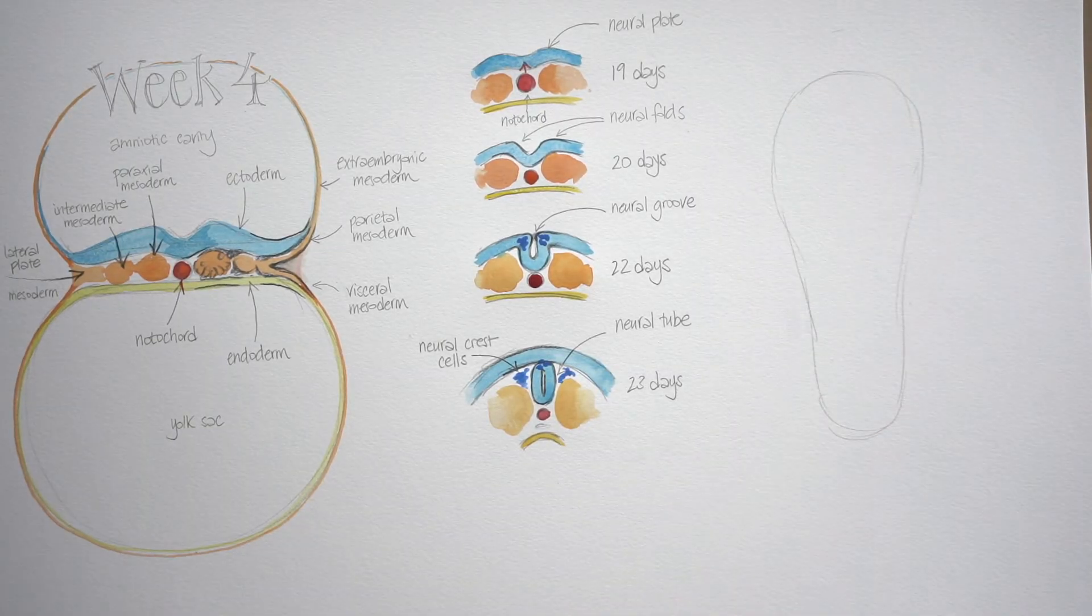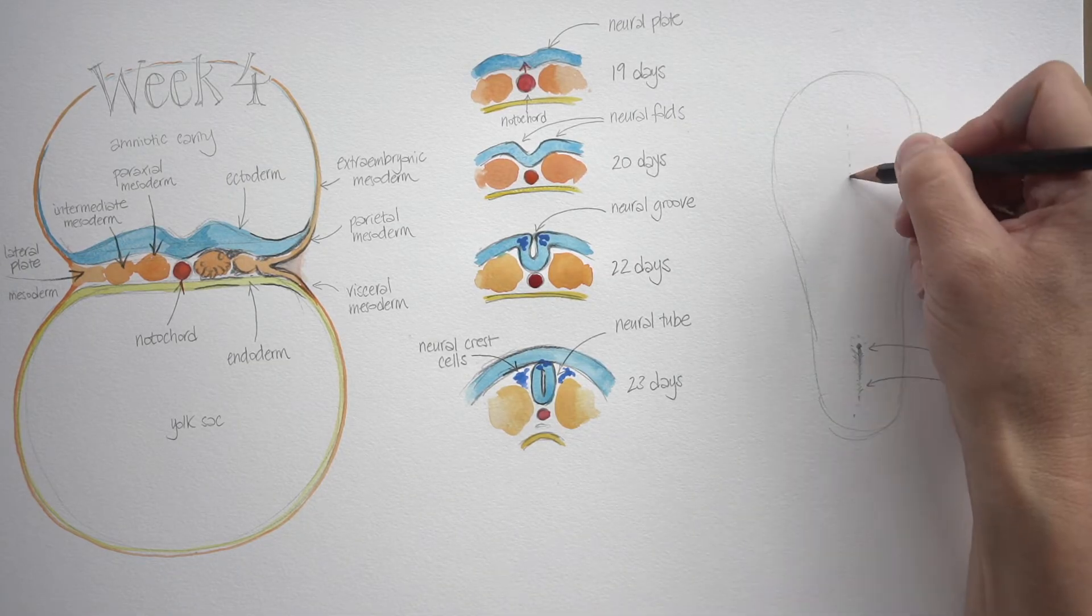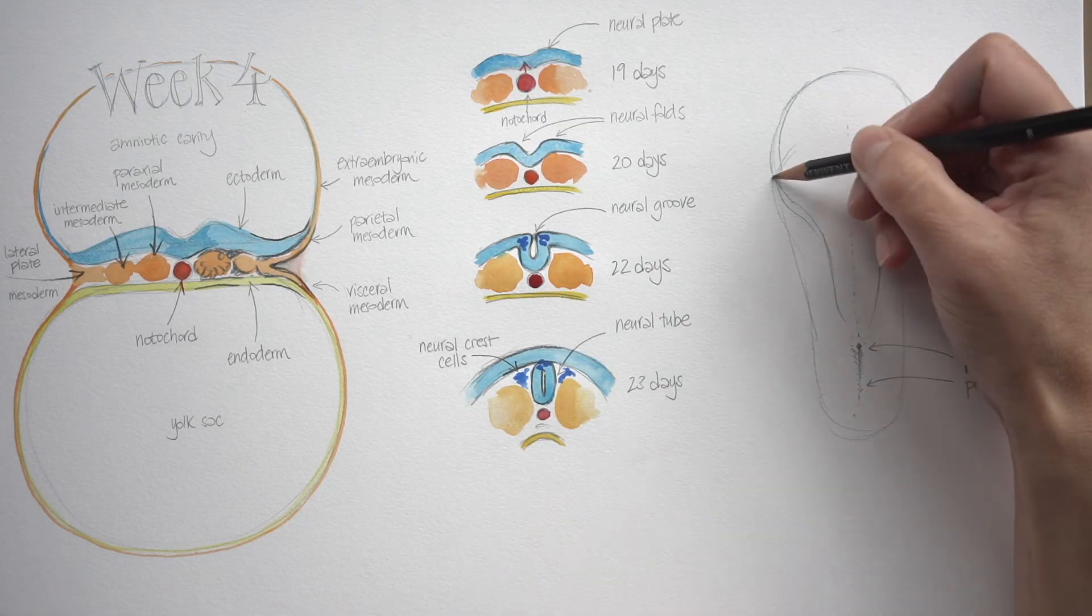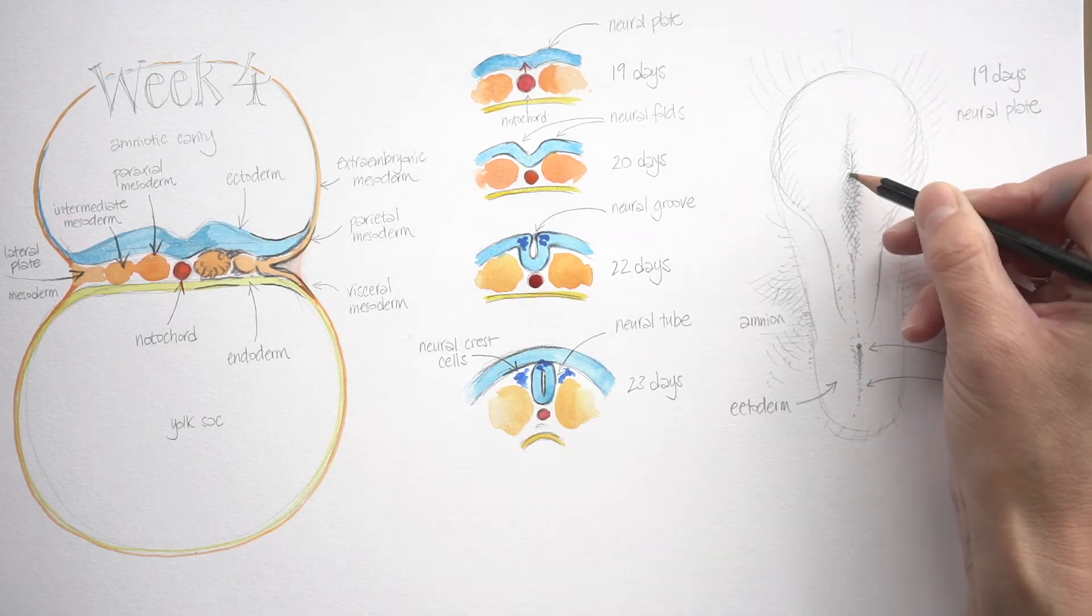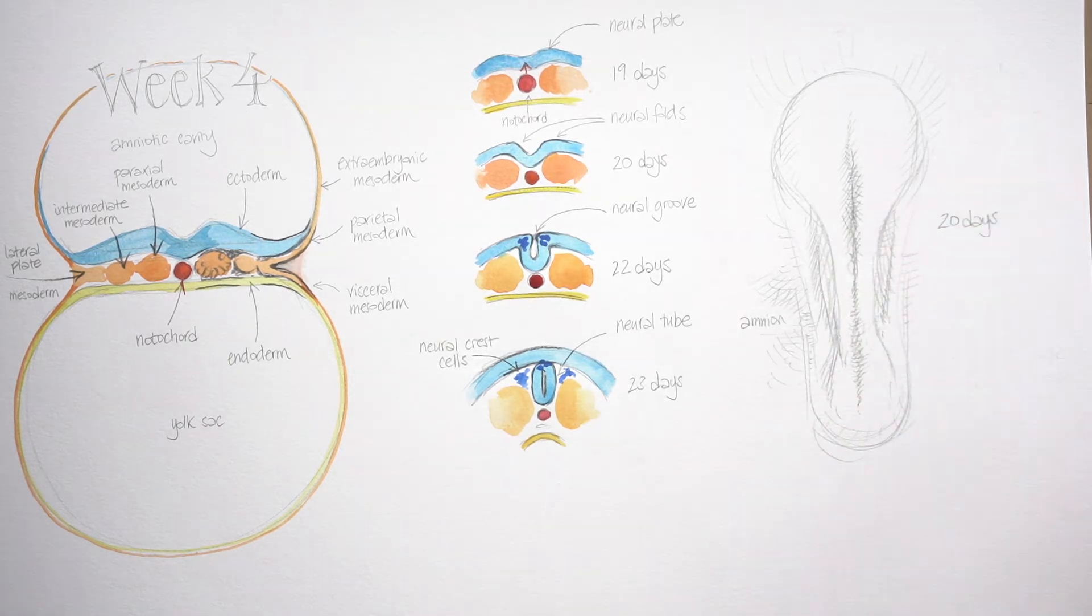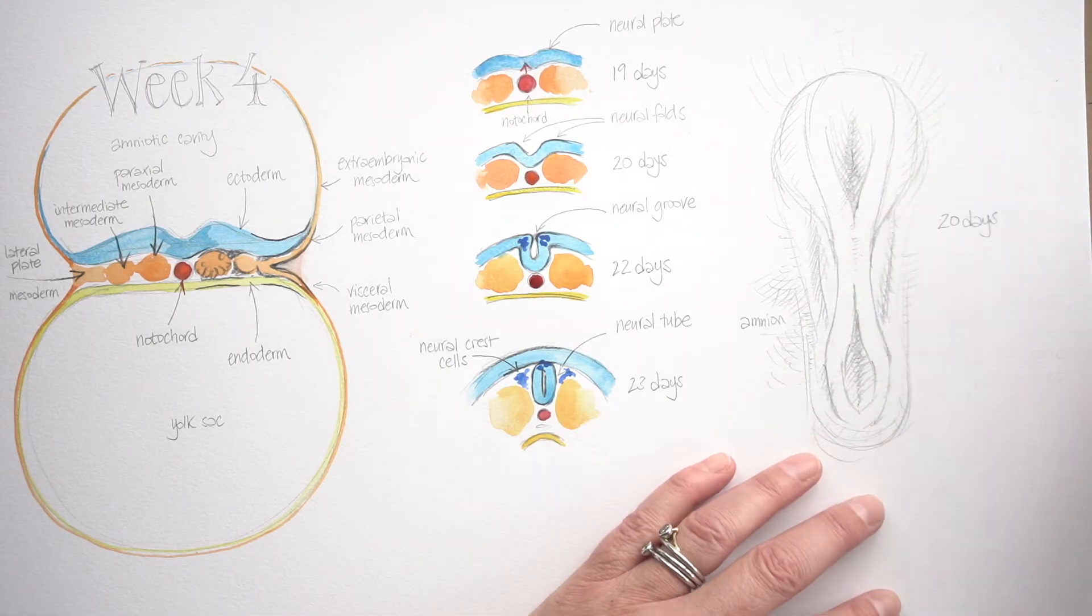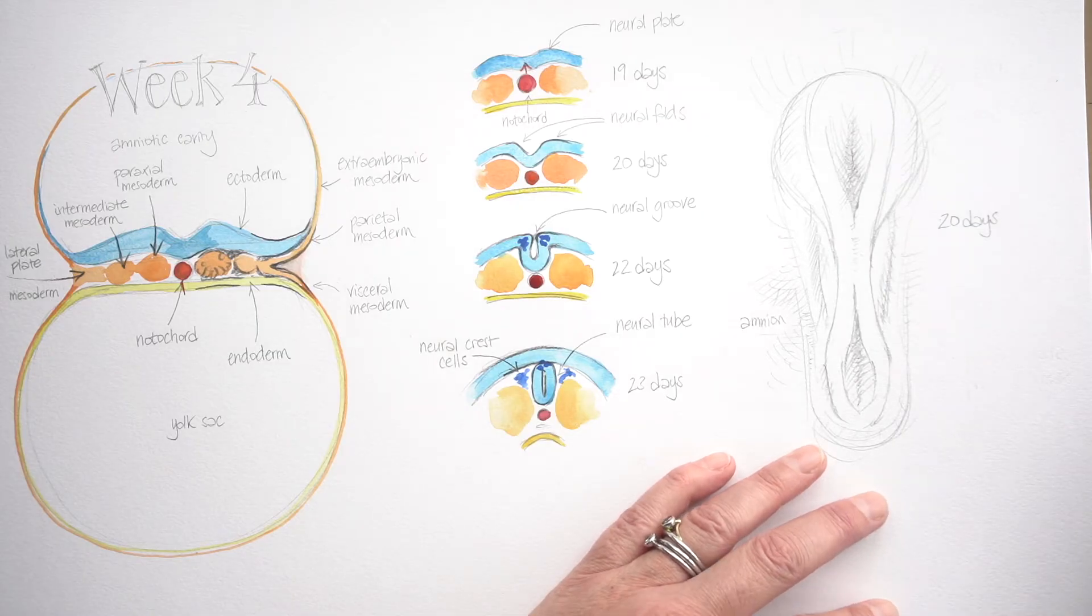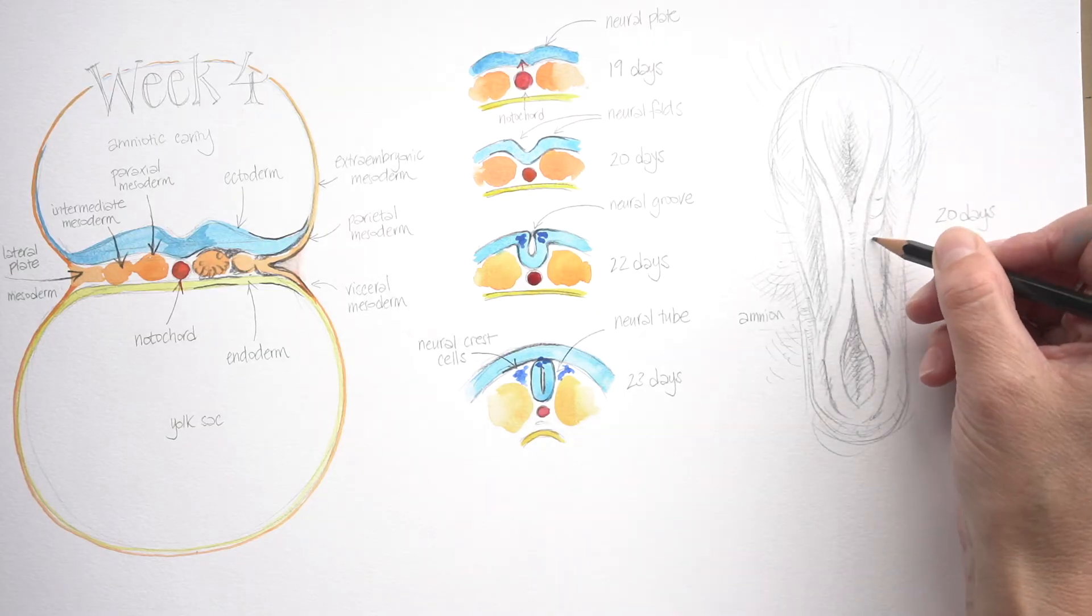Now, having looked at how the neural tube forms in cross sections, let's have a look at a slightly more three-dimensional representation of that. I want you to imagine that you're floating in the amniotic cavity looking down on the top of that trilaminar germ disc. You can see the ectoderm and you can see the way it's thickening up - it's almost like a kind of spoon shape at this point. Then the edges of it start to pull in as we see those neural folds forming, and then the folds come together and it starts to fuse. It doesn't fuse all the way along its length at the same time - it starts in the middle and then it zips up towards the top and down towards the bottom.